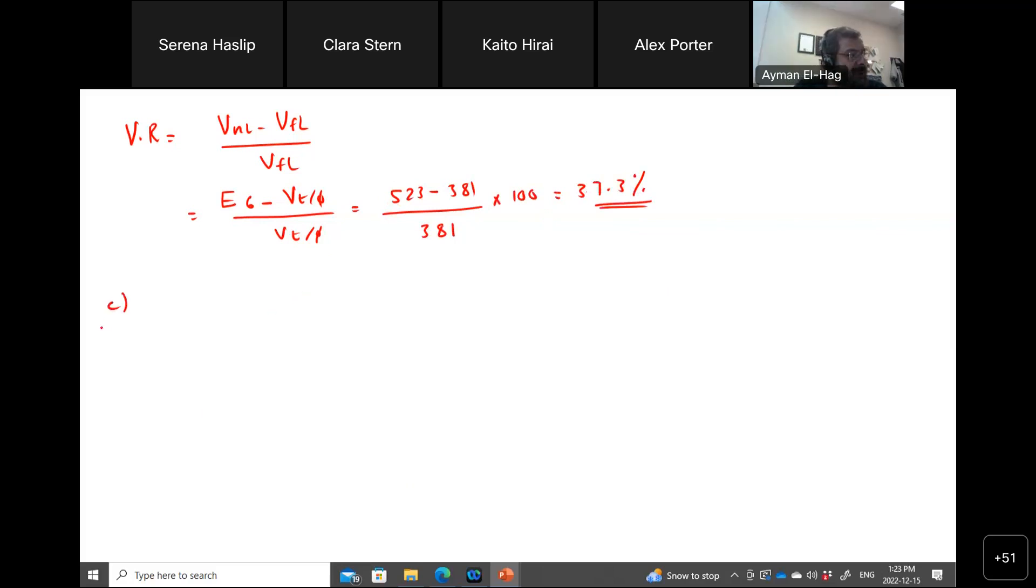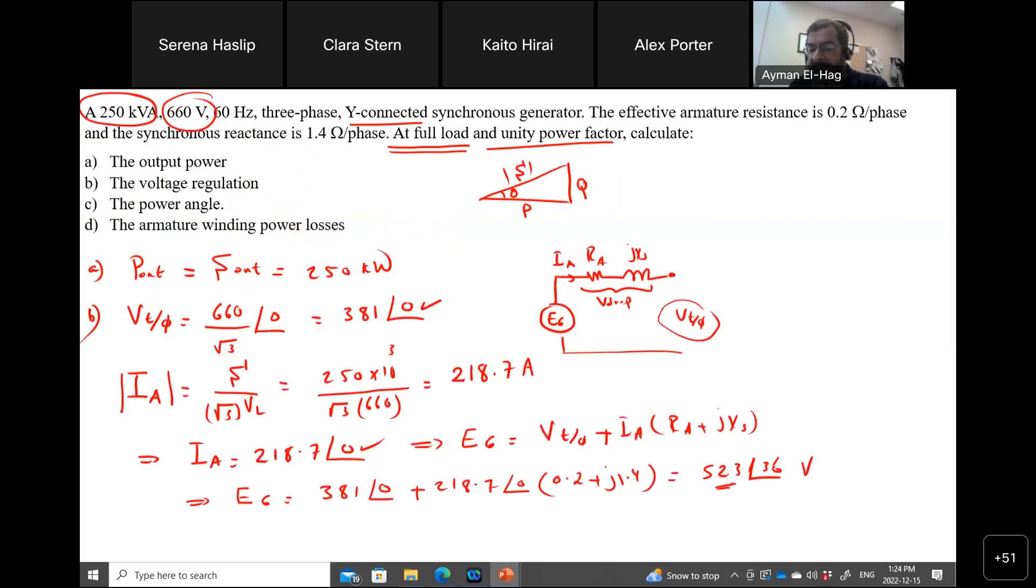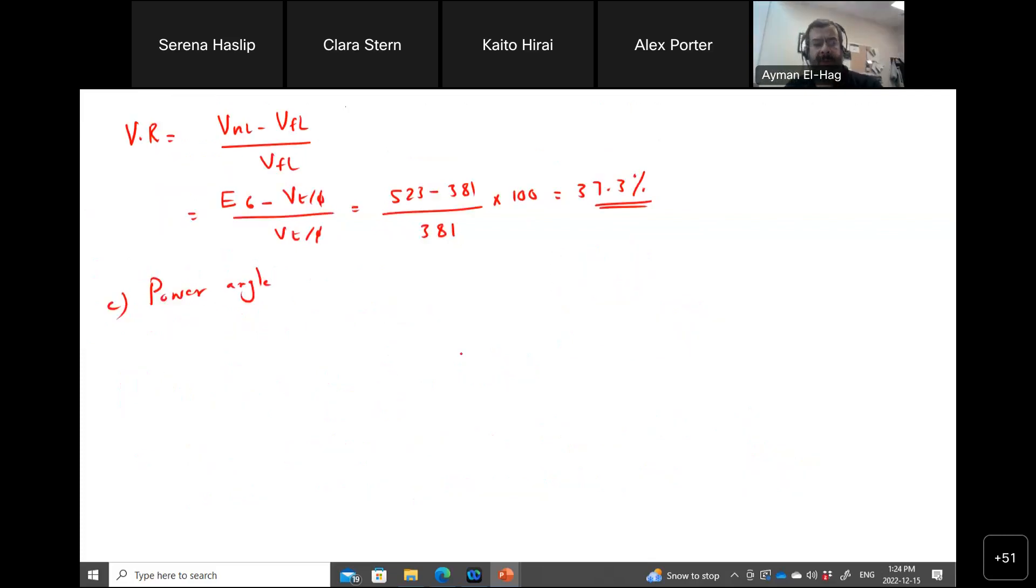Then in part C, it says, what is the power angle? Now, remember, the power angle is different than the power factor angle. We want to find the power angle. Now, the power angle is basically the angle of E_A. This is the angle difference between the internal generator voltage and V_T. Now, V_T has an angle of 0, so this will be your power angle. Here, delta is equal to 36 degrees.